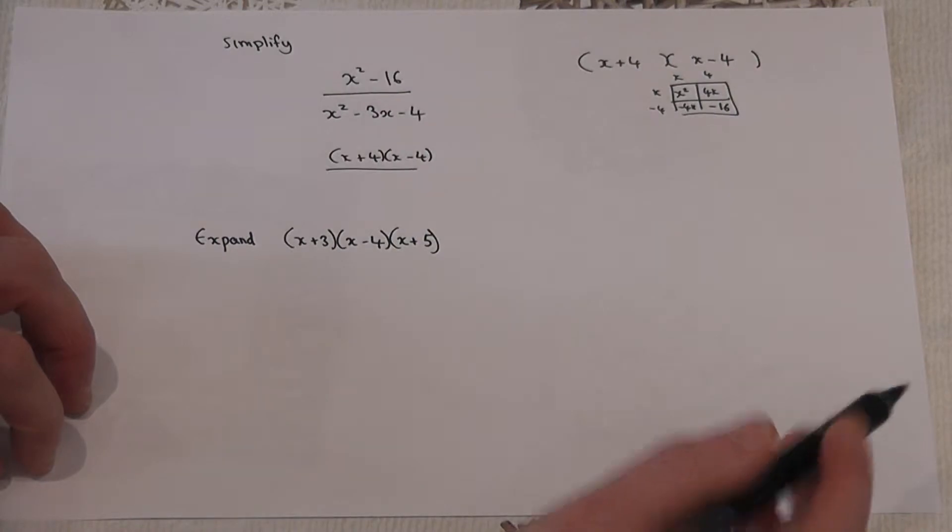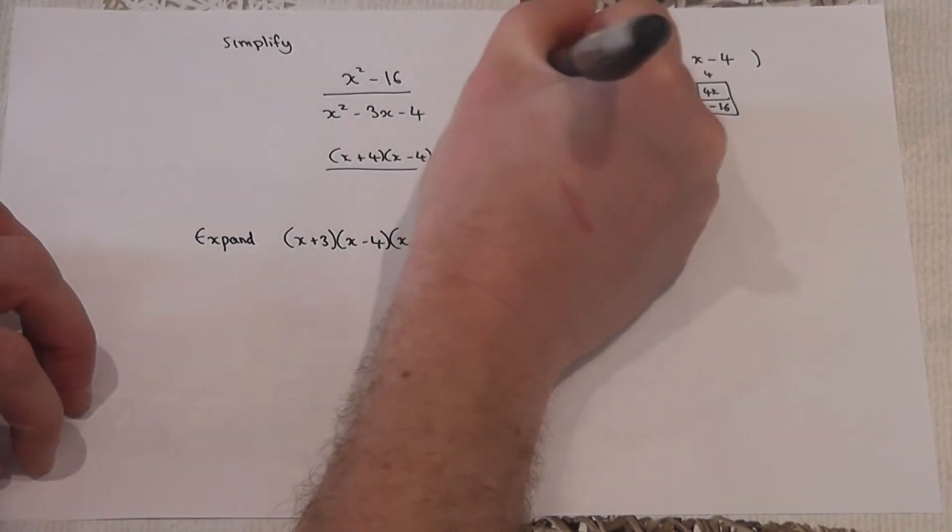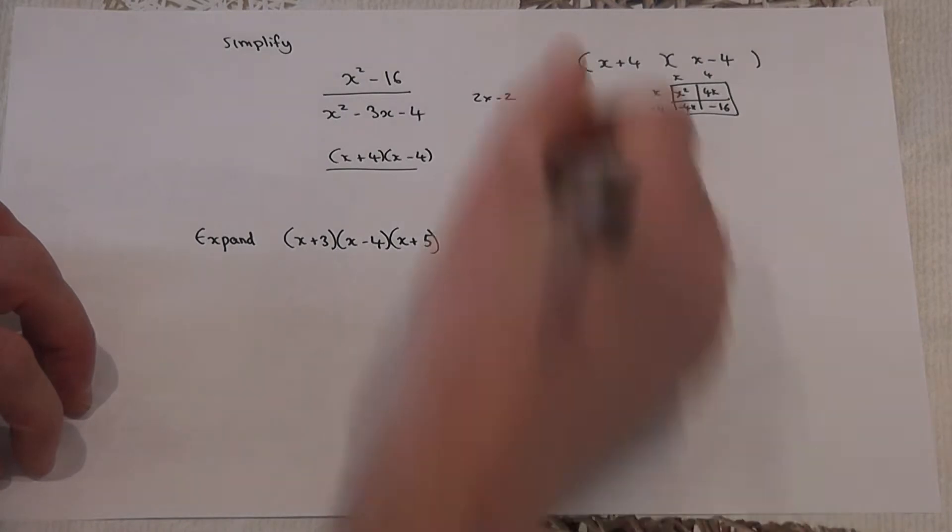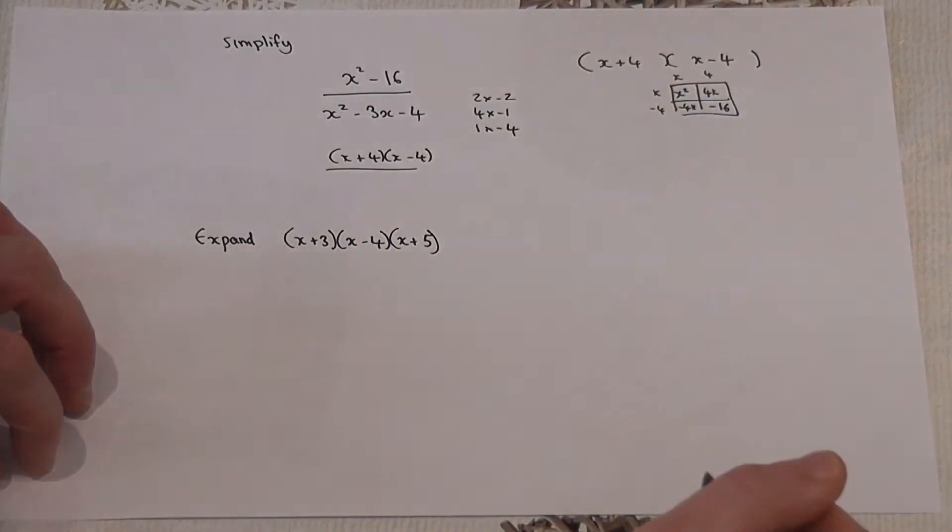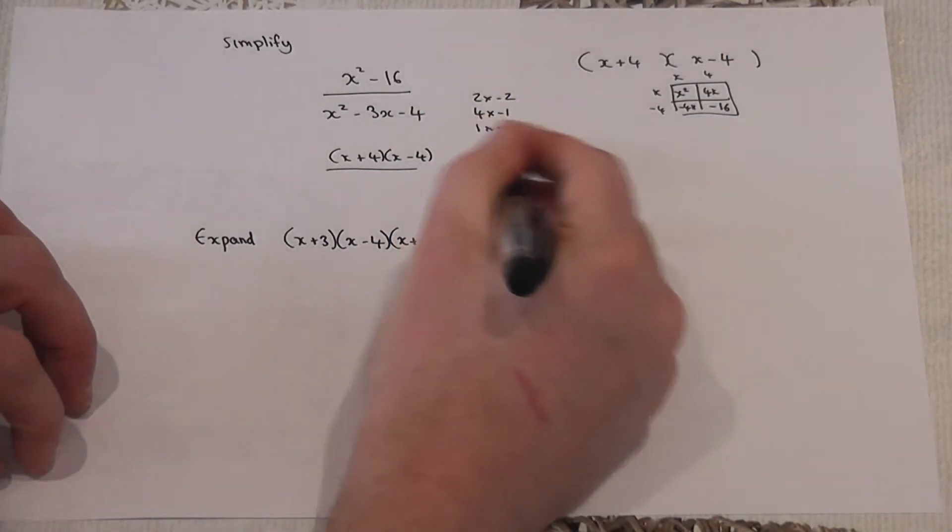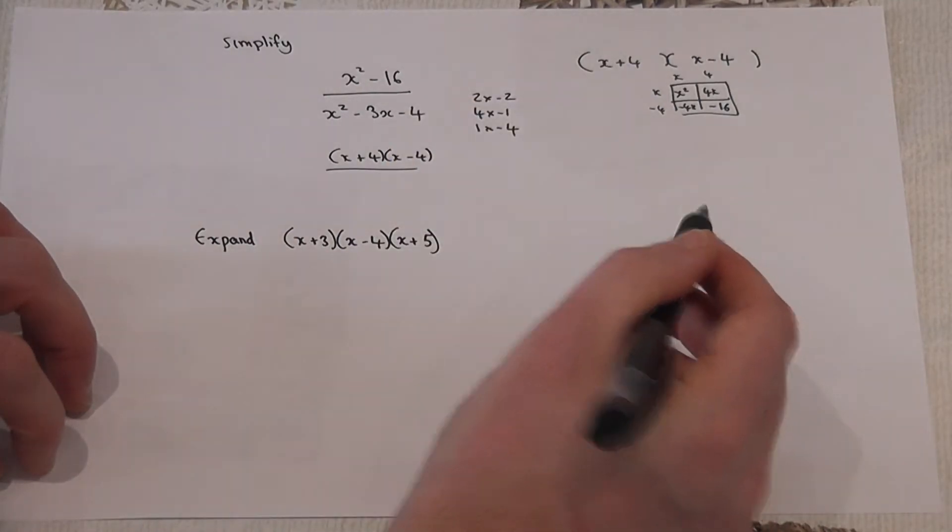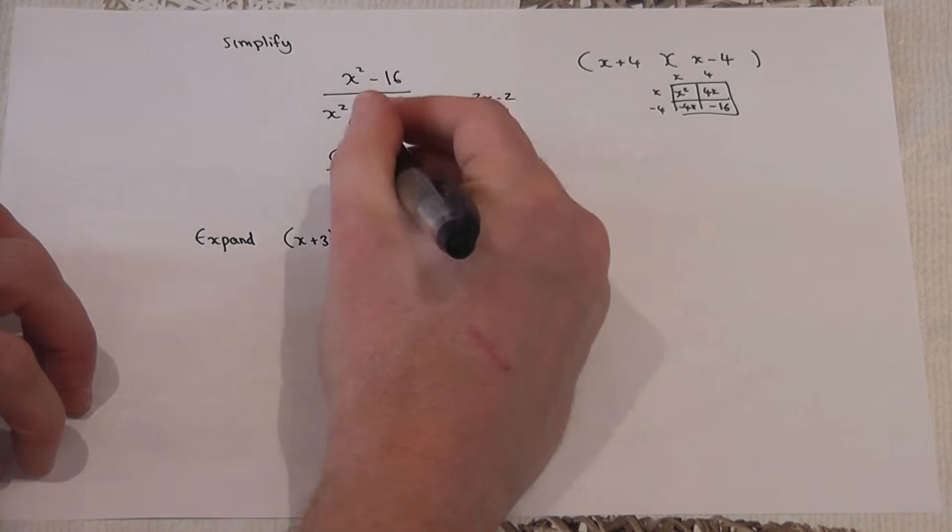Now the factors of minus 4 are either 2 times minus 2, or 4 times minus 1, or 1 times minus 4. Now if you look at this factor pair, 1 times minus 4 is minus 4, but 1 take away 4 is minus 3.